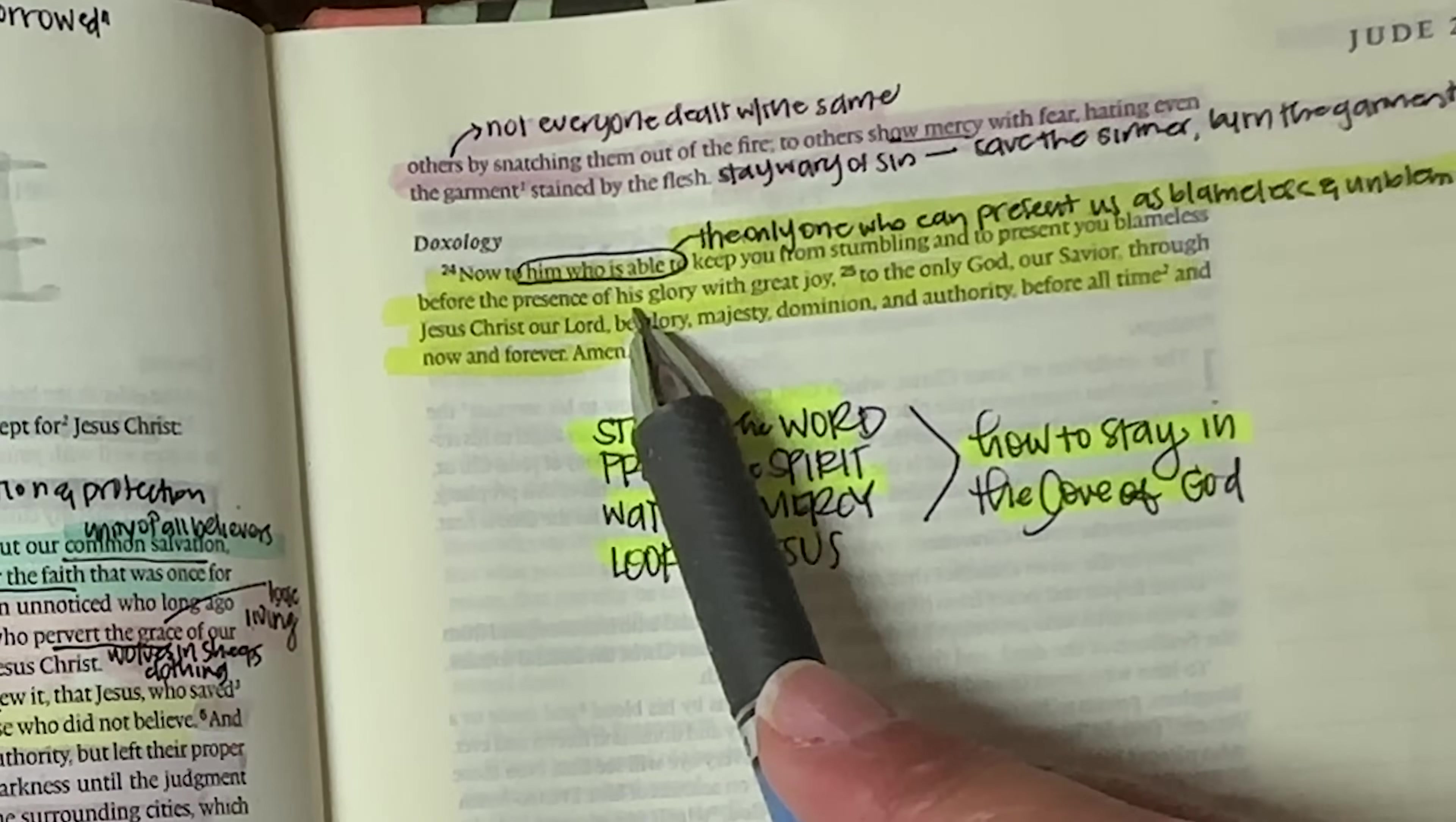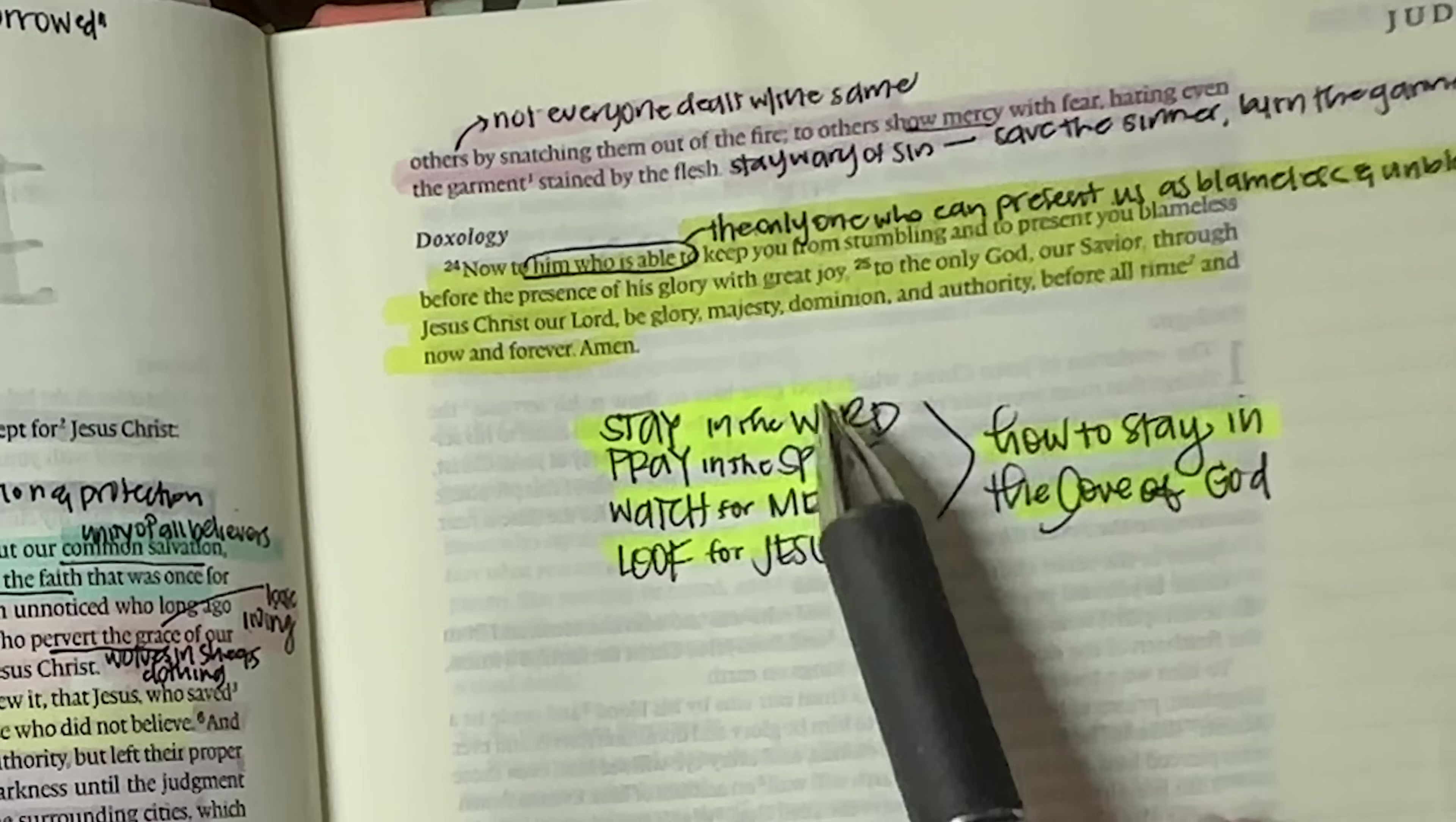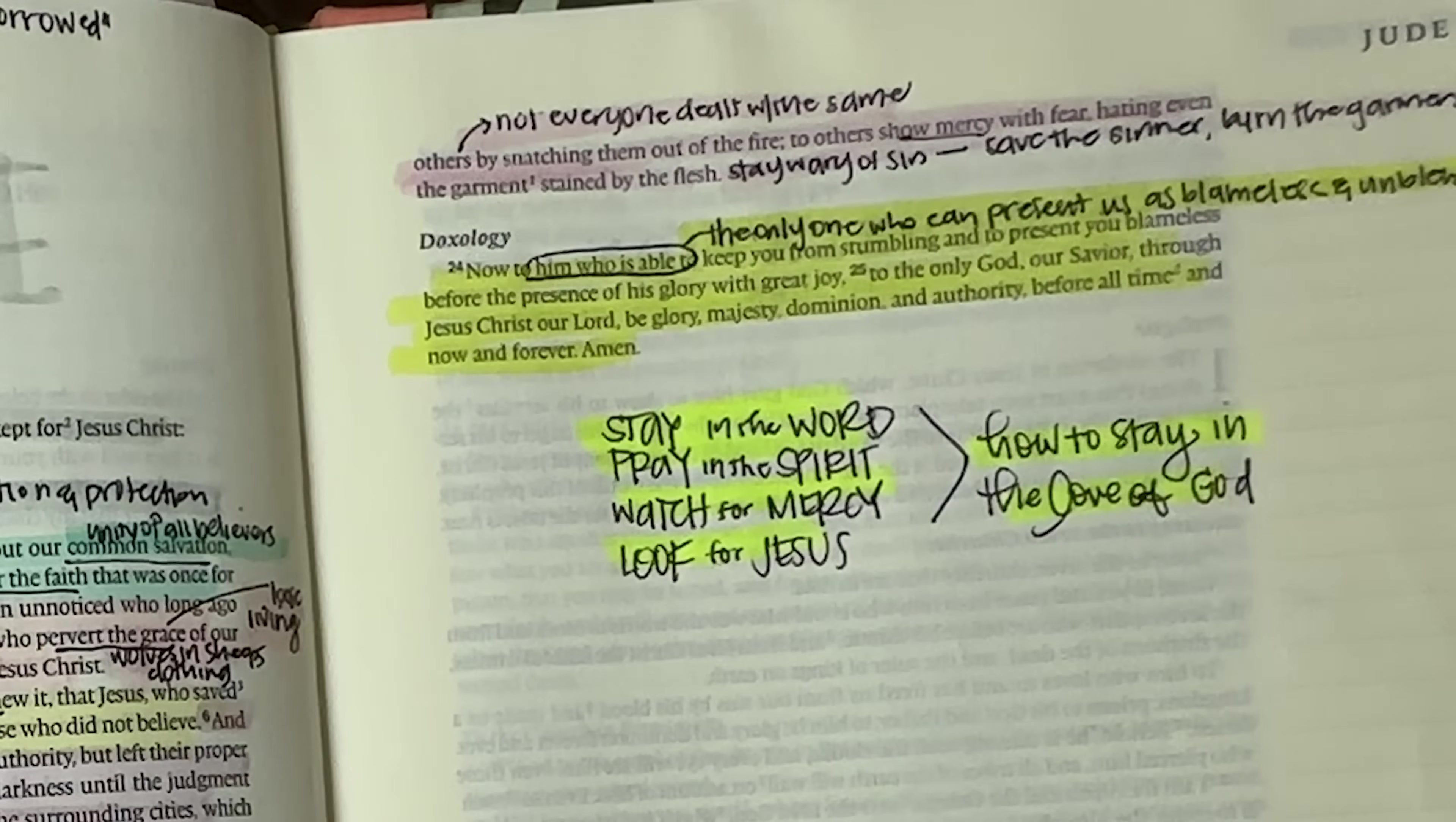Now to him who is able, of course, we know there's only one who is able to keep you from stumbling and to present you blameless before the presence of his glory with great joy. So the only one who can present us as blameless and unblemished is Jesus. To the only God, our Savior, through Jesus Christ, our Lord, be glory, majesty, dominion, and authority before all time and now and forever. Amen. Everybody shout a big amen to that. Till him be all glory, majesty, dominion, and authority before all time, now and forever. So from the beginning of time through eternity, amen and amen.